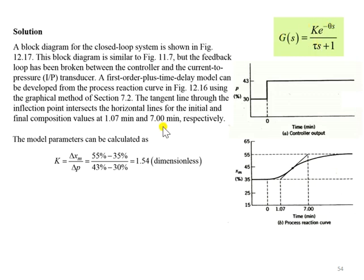Let's look at the first approach here to estimate the process gain. K can be estimated by dividing the change of output over the change of input. From the graph...